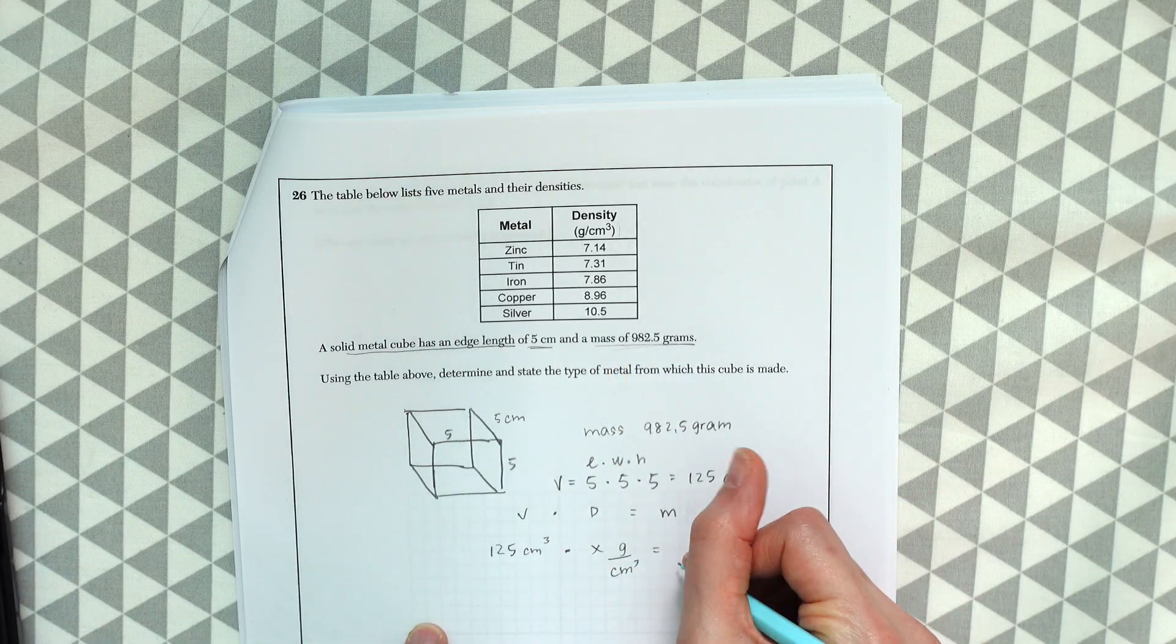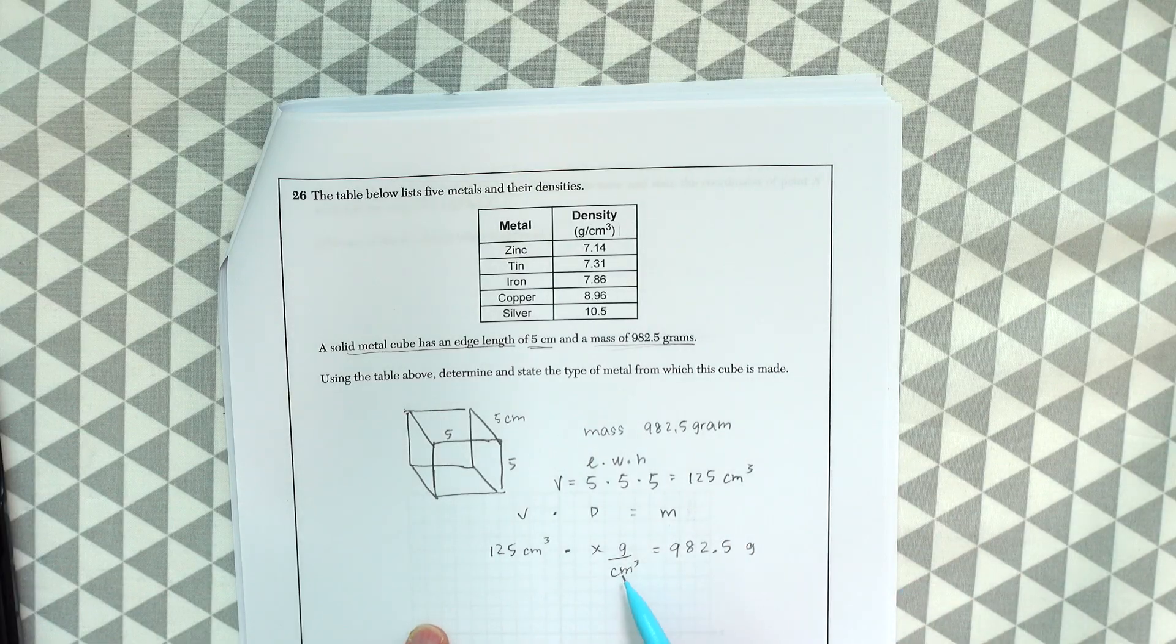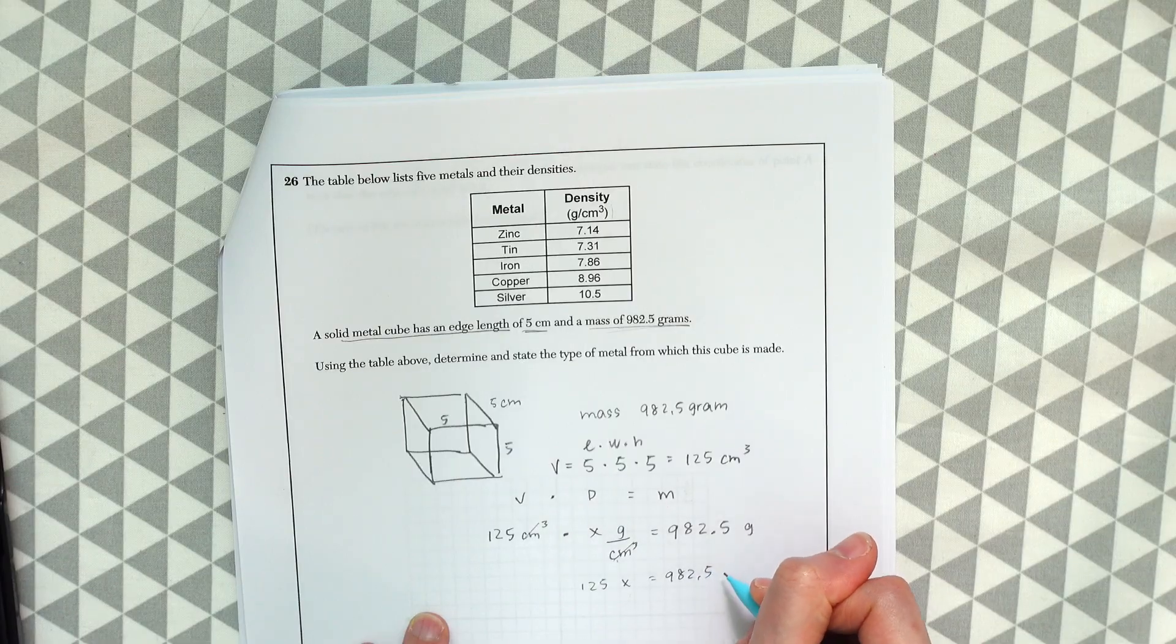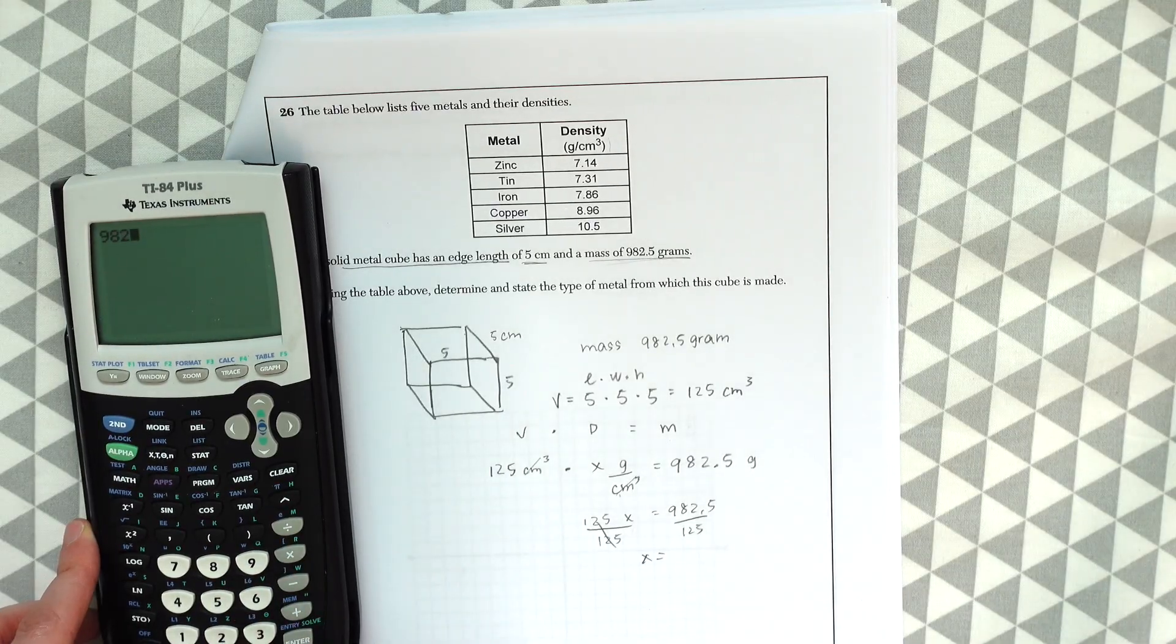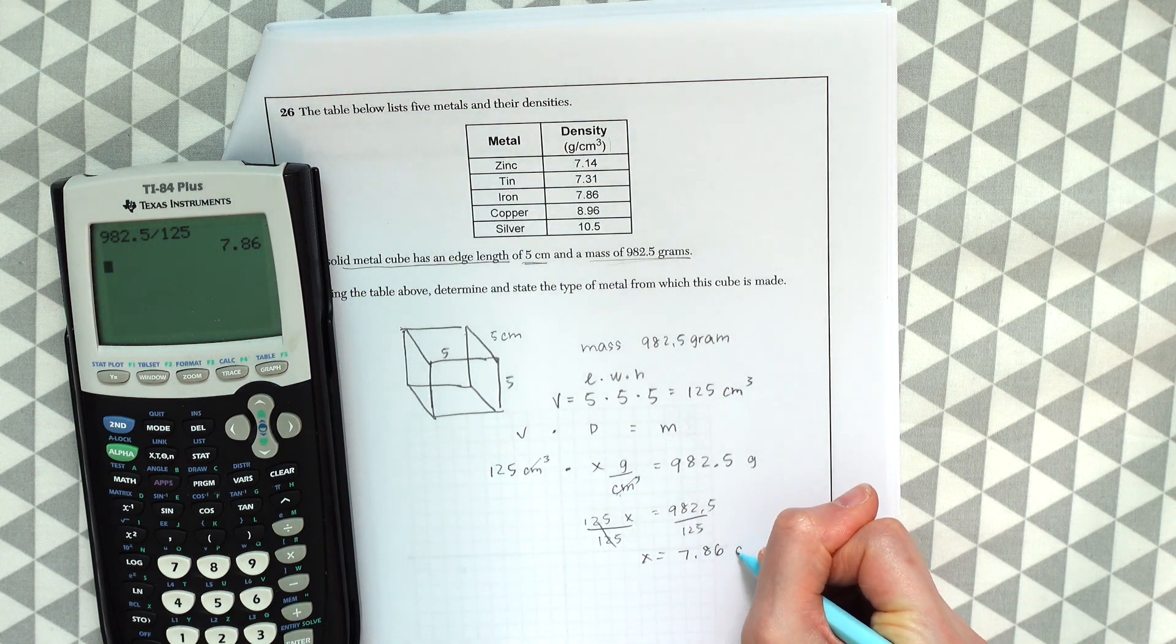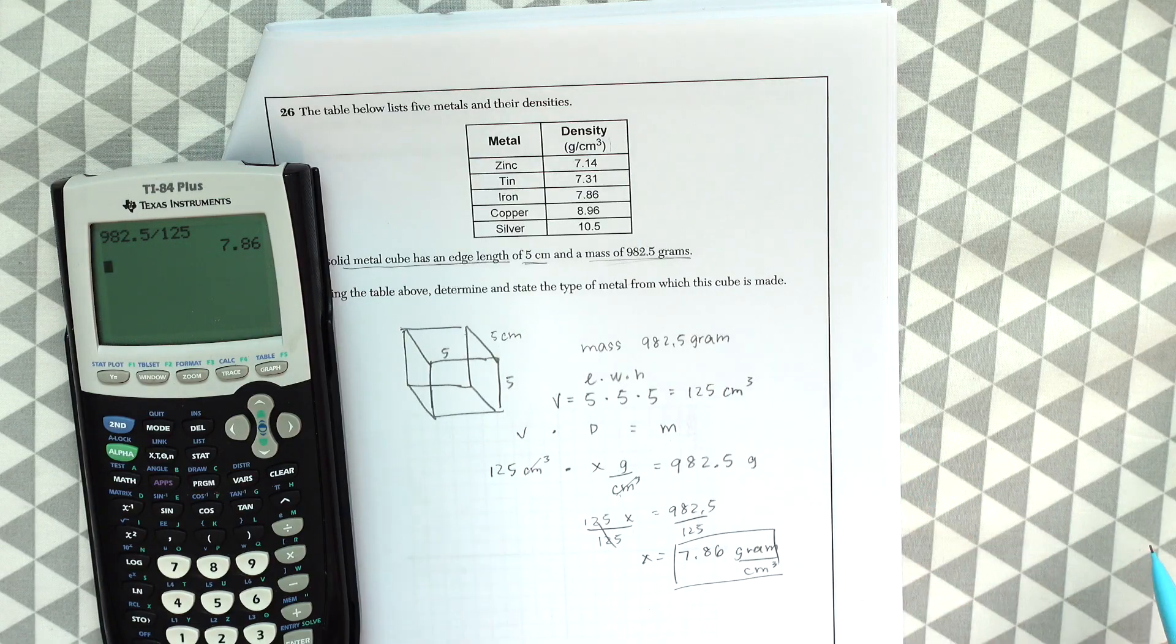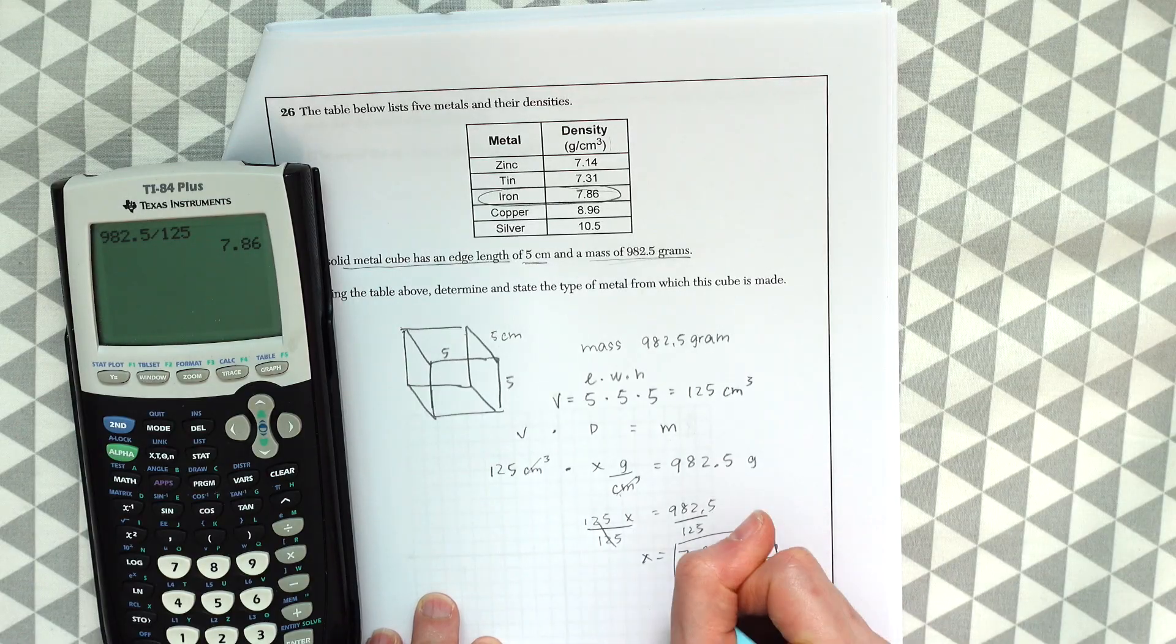So we're going to set this equal to the mass based on our formula 982.5 grams and notice these are going to cancel out so we're left with 125 x which represents grams equals 982.5 and then we're just going to divide to find x. So 982.5 divided by 125 and we get 7.86 grams per centimeters cubed. So if we look at our chart what is 7.86 grams centimeter cubed that would be iron. So the answer here is iron.